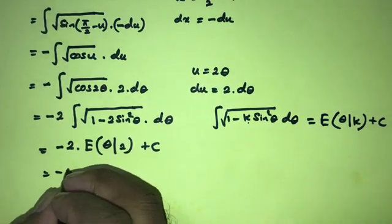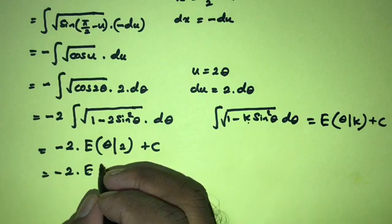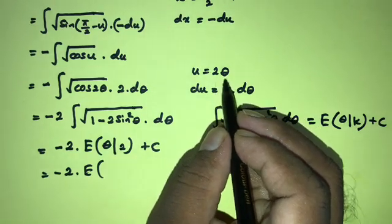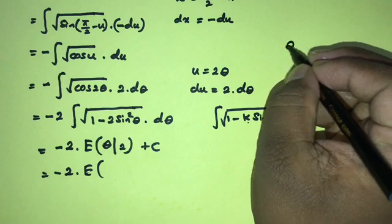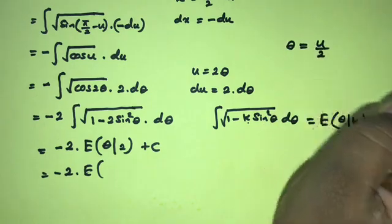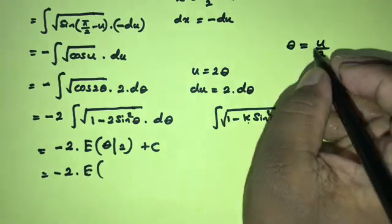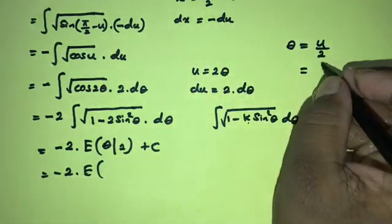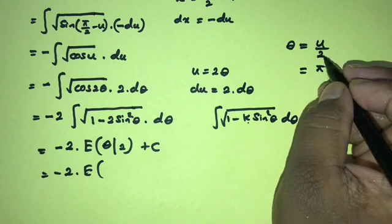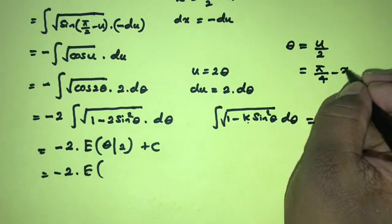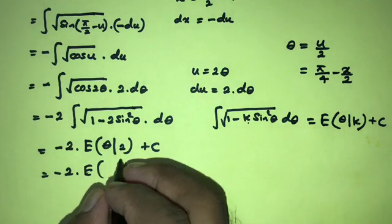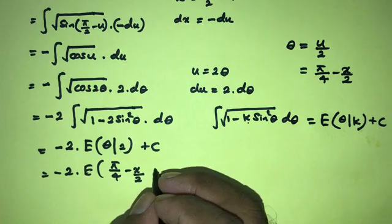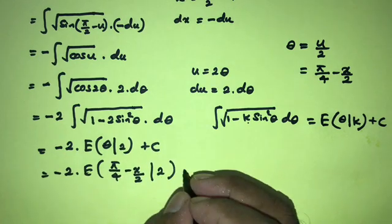Now we substitute back: theta equals u over 2, and we know u equals 5 over 2 minus x. So theta equals (5 over 2 minus x) divided by 2, which simplifies to 5 over 4 minus x over 2. The final answer is minus 2 times E(5/4 minus x/2, 2) plus C.